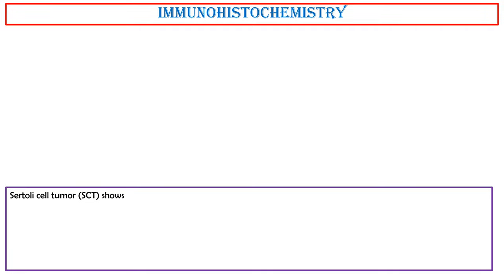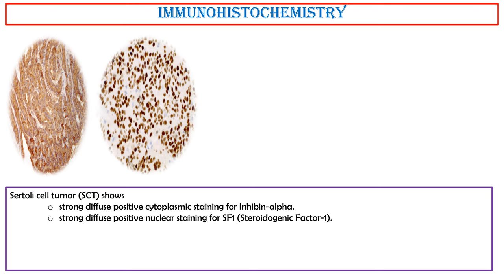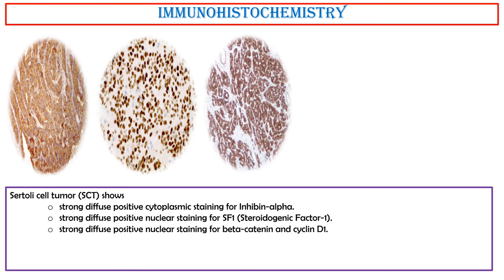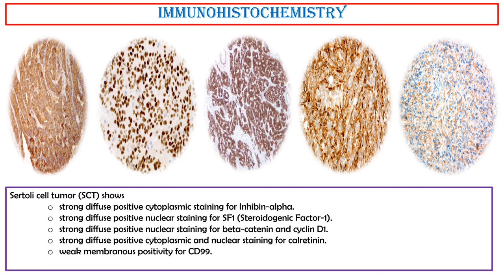Immunohistochemistry: Sertoli cell tumor shows strong diffuse positive cytoplasmic staining for inhibin alpha; strong diffuse positive nuclear staining for SF1 (steroidogenic factor 1); and strong diffuse positive nuclear staining for beta-catenin and cyclin D1. Nuclear beta-catenin and cyclin D1 positivity correlate with mutations in the CTNNB1 gene.